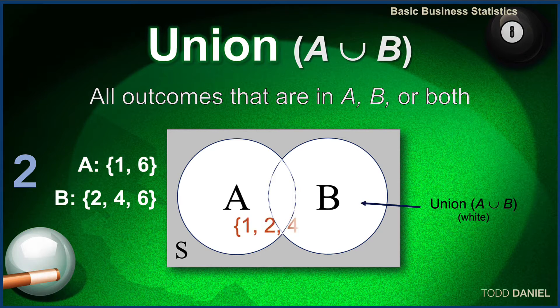In A, we have 1 and 6. In B, we have 2, 4, and 6. Therefore, the union is 1, 2, 4, and 6.